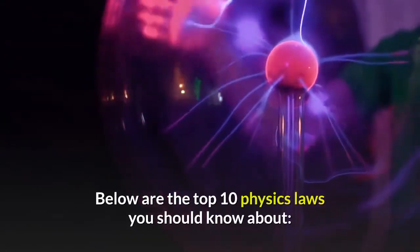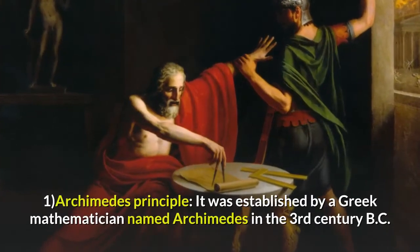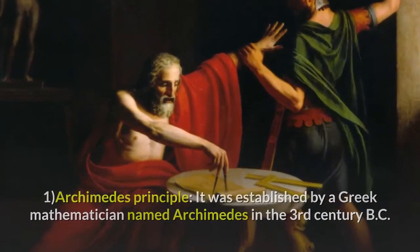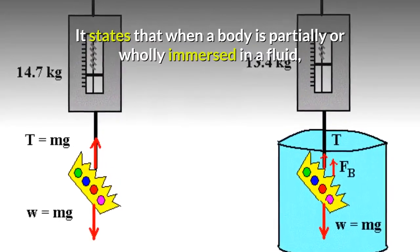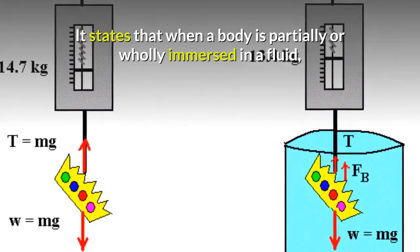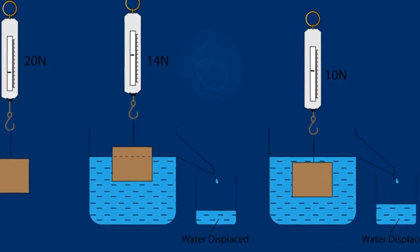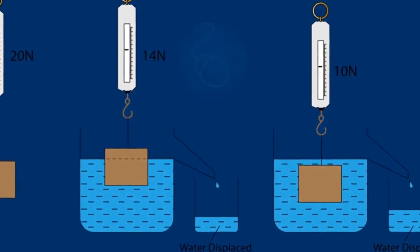Below are the top 10 physics laws you should know about. Number 1: Archimedes Principle. It was established by Greek mathematician Archimedes in the 3rd century BC. It states that when a body is partially or wholly immersed in a fluid, it experiences an upthrust force acting upwards which is equal to the weight of the fluid displaced.